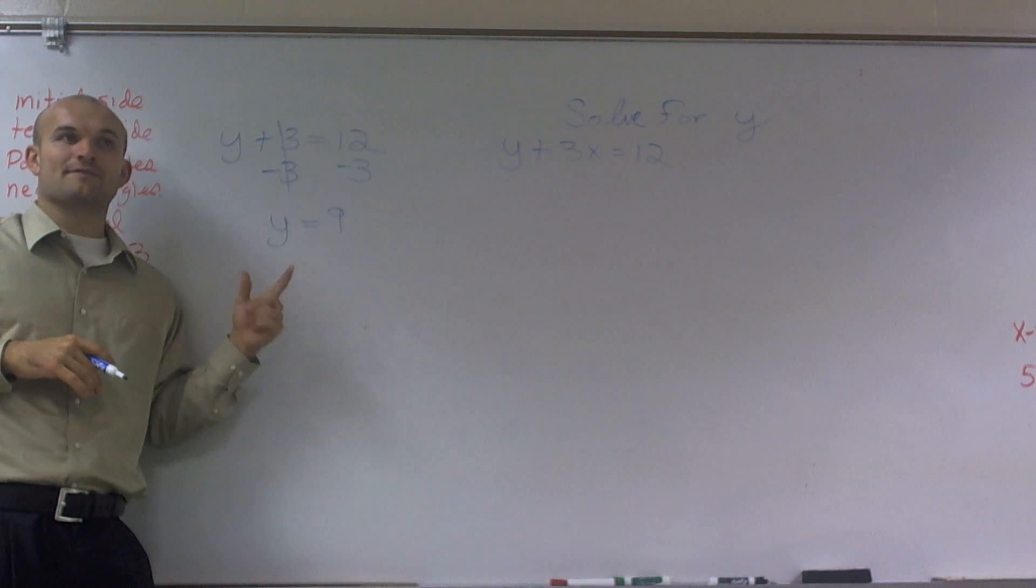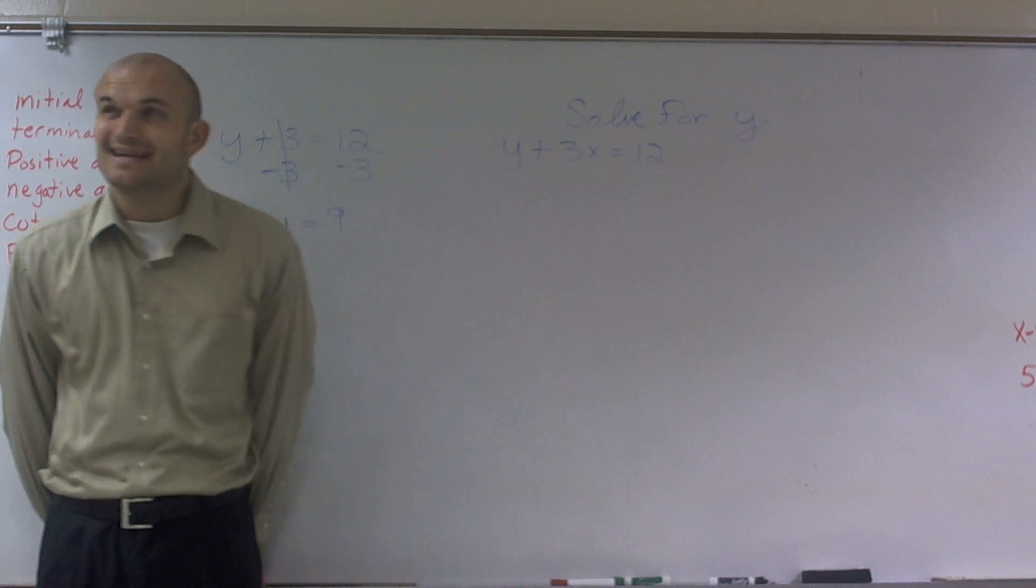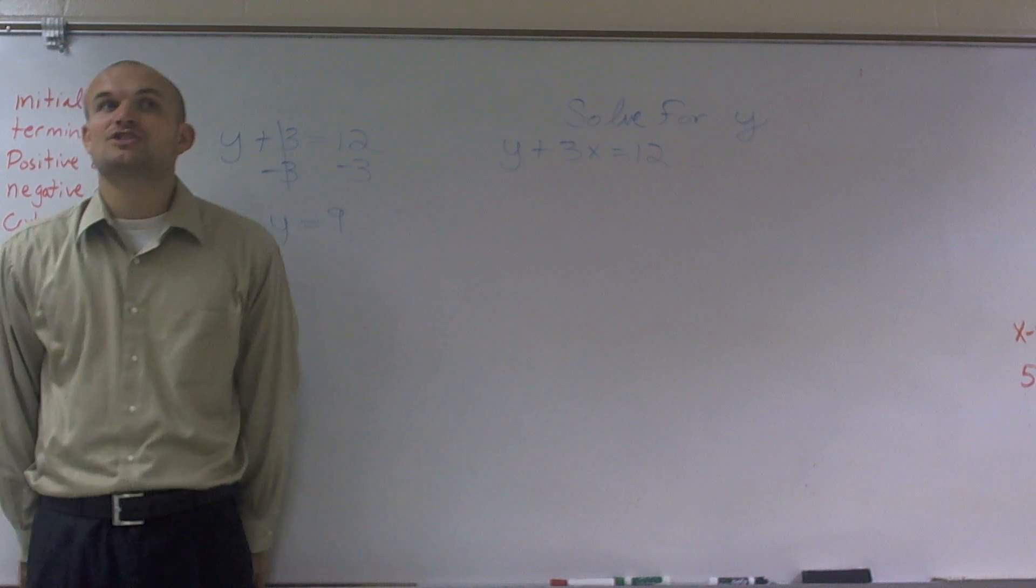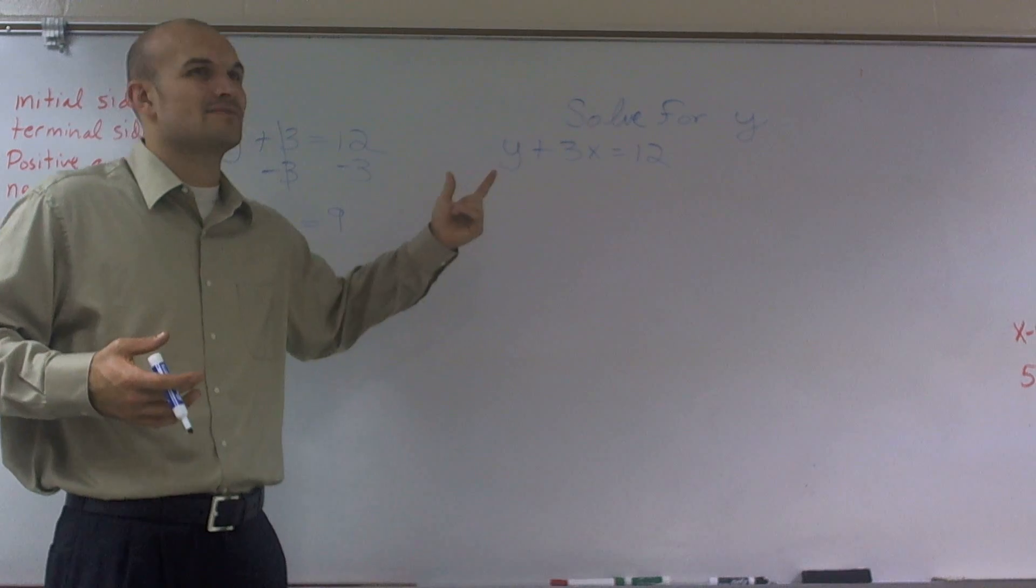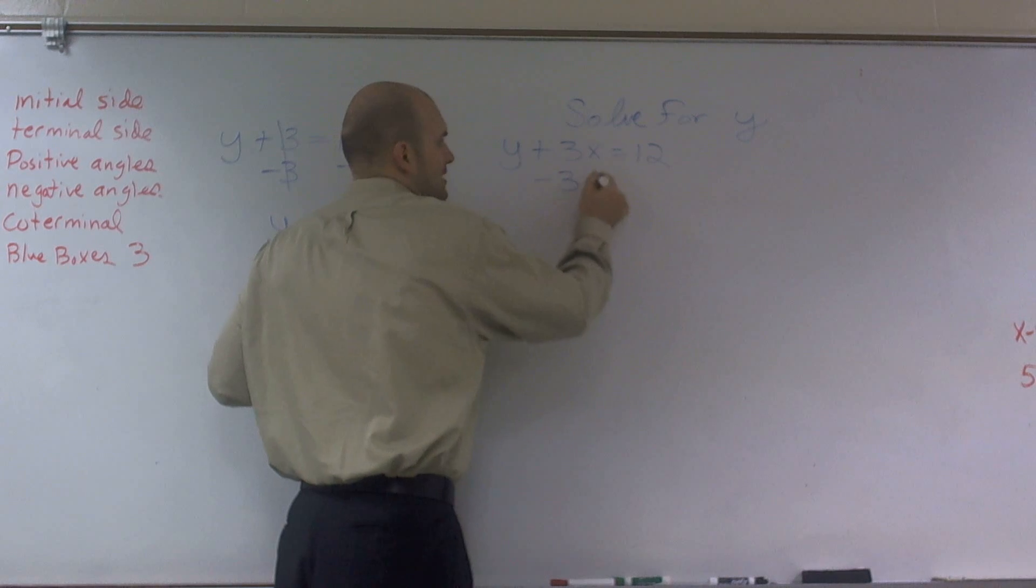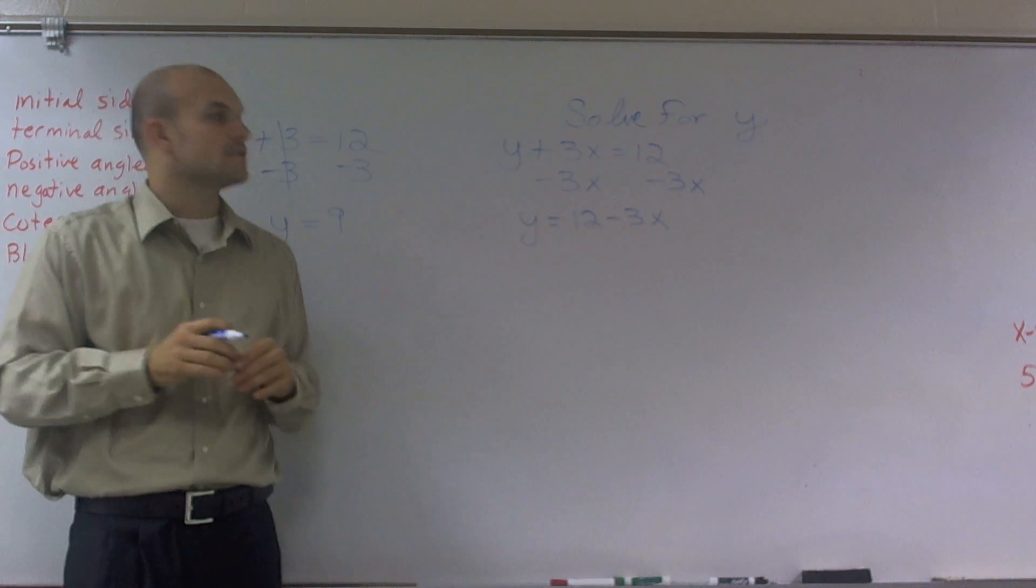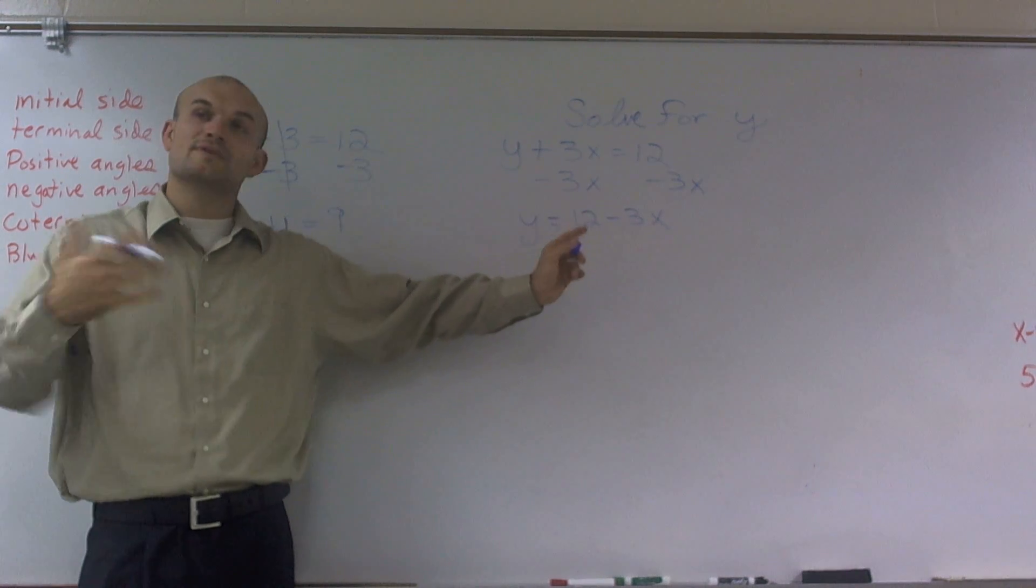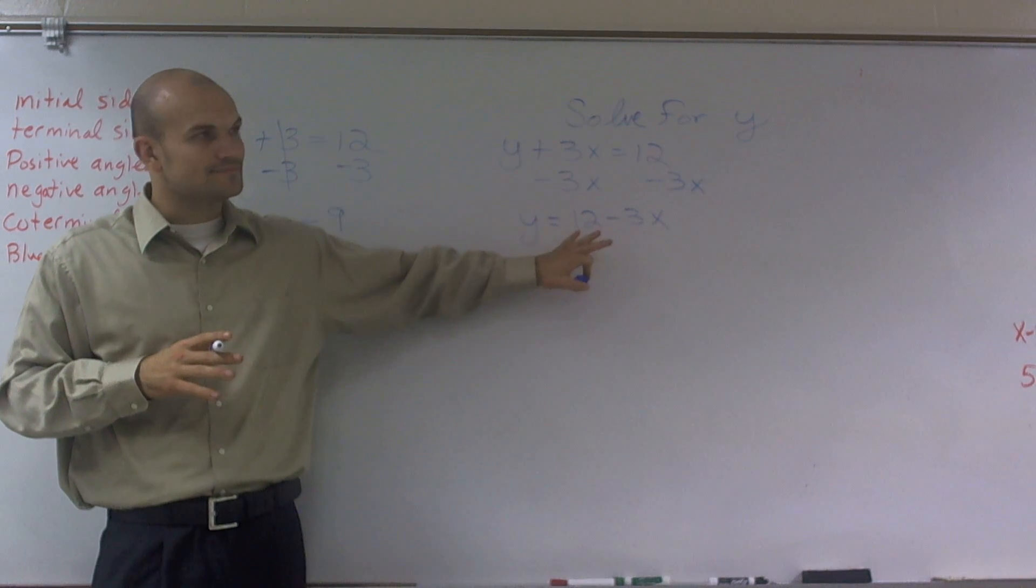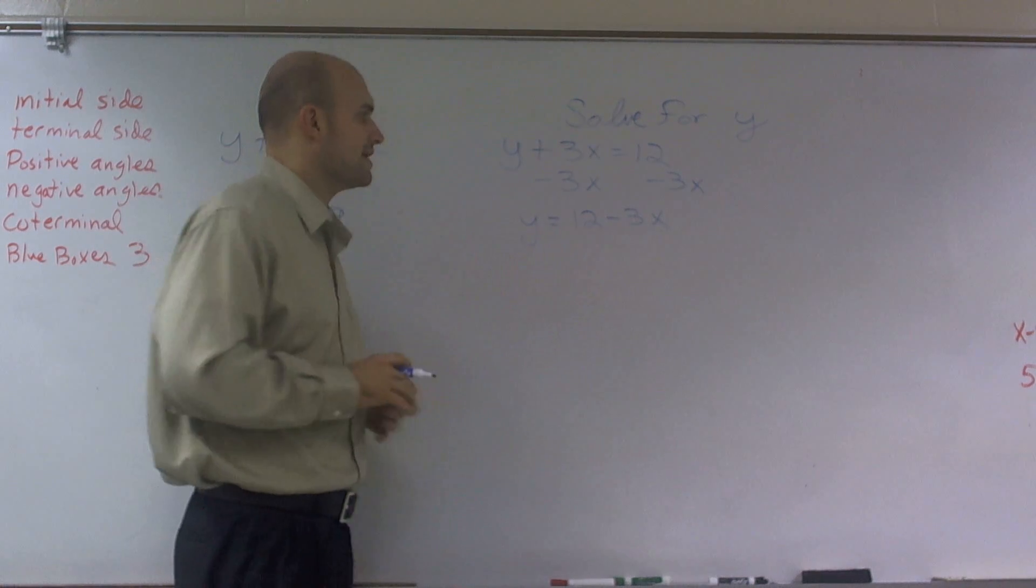Then we started moving on to a little more difficult problems. So now, what if I'm adding a 3x? Is that going to change the problem? And the answer is, yes, it kind of is. But really, you're still going to do the exact same thing. If I have a y plus a 3x, to get rid of now a 3x, I need to subtract a 3x. So therefore, y equals 12 minus 3x. Now, I've already gone through why you can't do 12 minus 3x. It does not equal 9. It does not equal 9x. I've already explained that.